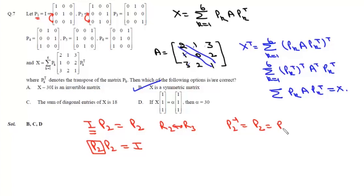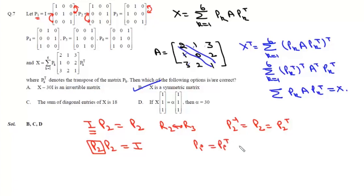So p2 is also equal to its transpose. In the same way, if we use elementary row operation in p3 and interchange r1 and r2, it becomes I, and interchanging r1 and r2 in I gives p3. Therefore all given matrices p2, p3, p4, p5, and p6 are self-inverse, meaning for any pi: pi = piᵀ = pi inverse.